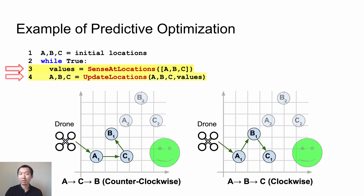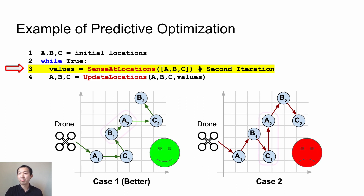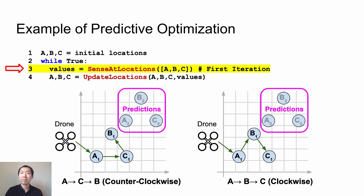Then, let's move to the next iteration. Suppose the new locations are A2, B2, and C2. We can find the two cases turn out to be not equivalent. In fact, the first case on the left side is much better than the one on the right side. This is because the drone has to fly from C1 to A2 in case 2, while the drone only needs to fly from B1 to A2 in case 1, which is much shorter. Now, if we can predict what will happen next, then we will know that at the first iteration, we should let the drone visit the three locations in a counterclockwise way rather than clockwise.